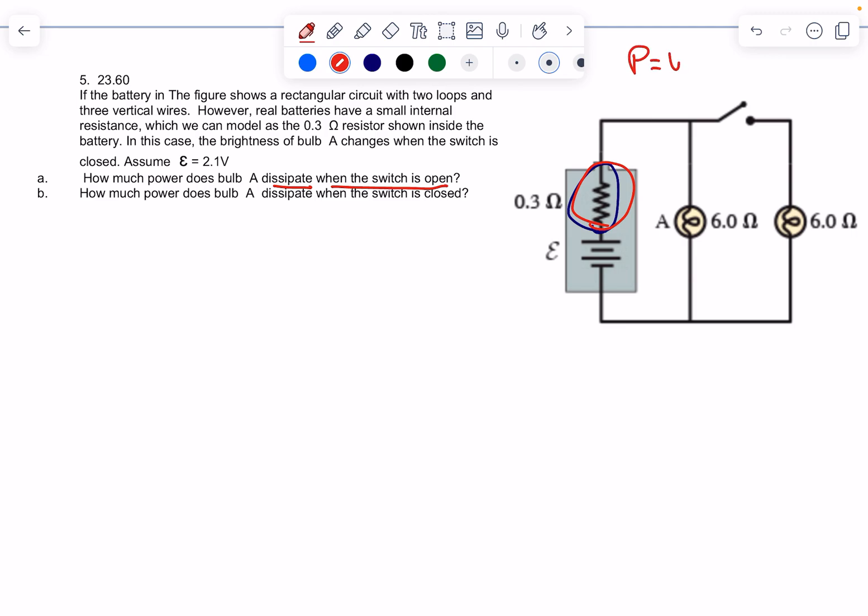We're talking about power, so the important thing to understand is power is V squared over R. I'm talking about bulb A, it's the same as bulb B—they're both 6 ohms. I need to know the voltage and the resistance. We already know the resistance R is 6.